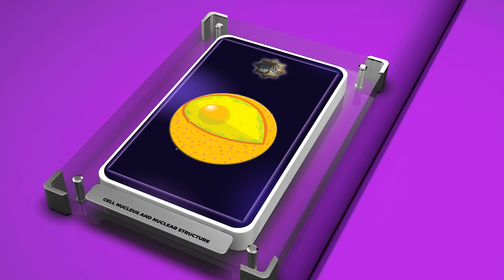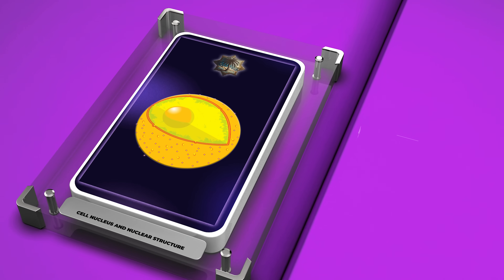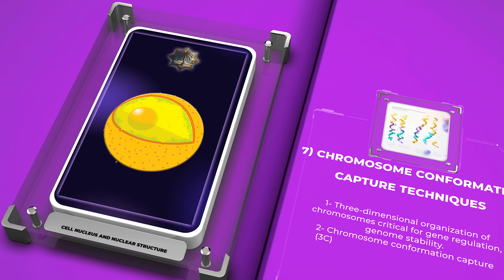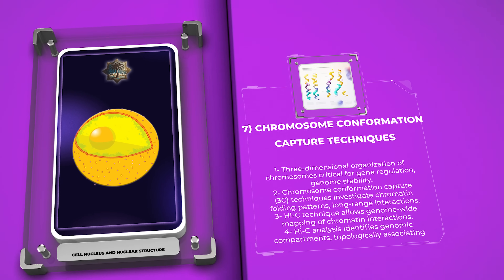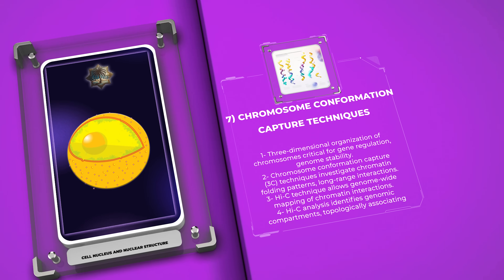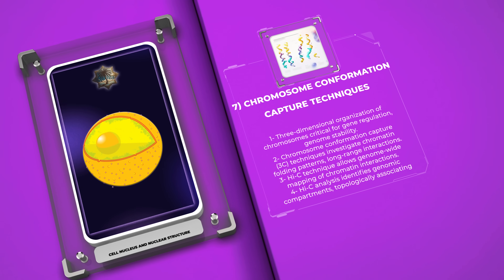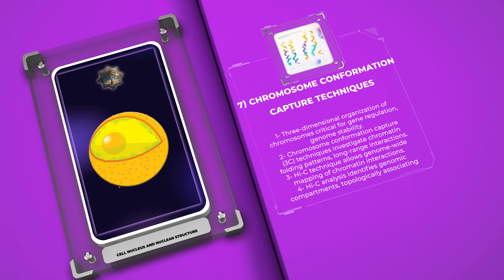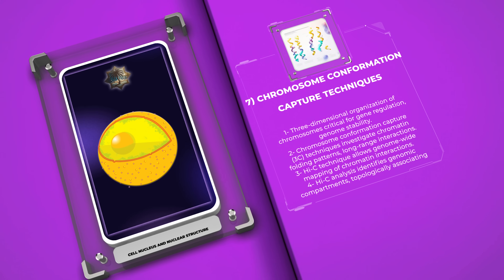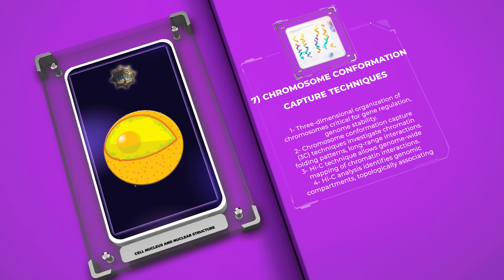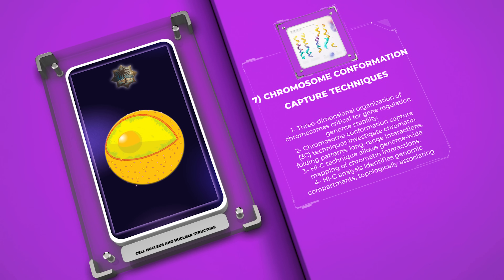The three-dimensional organization of chromosomes within the nucleus is critical for proper gene regulation and genome stability. Chromosome conformation capture (3C) techniques enable the investigation of chromatin folding patterns and long-range interactions between distant genomic regions. The widely used technique known as Hi-C allows the genome-wide mapping of chromatin interactions. By analyzing Hi-C data, researchers can identify genomic compartments, topologically associating domains (TADs), and chromatin loops. These insights into the 3D architecture of the genome contribute to our understanding of gene regulation, disease mechanisms, and evolutionary processes.